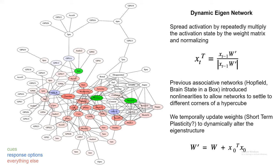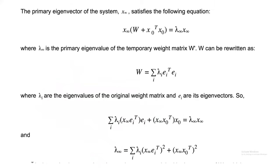Rather than introduce nonlinearities, we're going to assume that there's a temporary change to the weight structure, which involves adding the outer product of the cue vector with itself temporarily to the weight matrix. By doing that, we change what the primary eigenvector of the system is, so now it will be different on each trial.